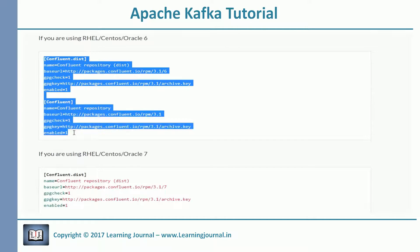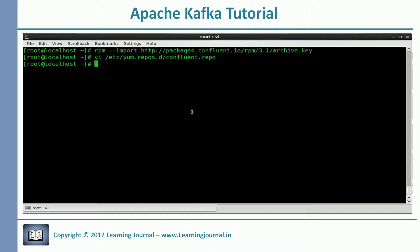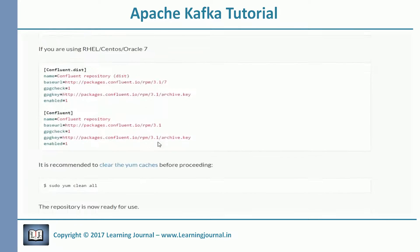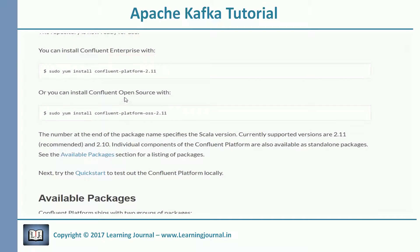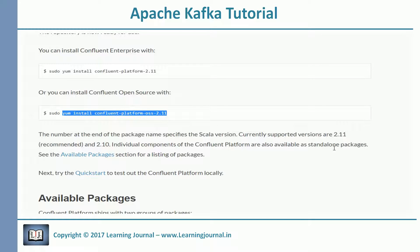I need to copy and paste all of this into my repo file. We want to install the open source version, so we execute this command. This 2.11 represents the Scala version, so don't get confused with the Confluent platform version or Kafka version.